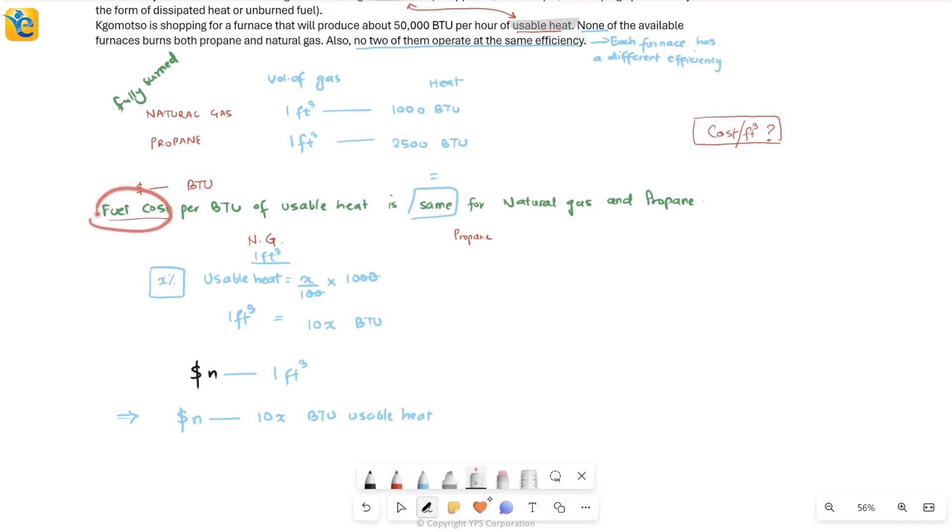This statement talked about cost per BTU of usable heat. So I simply have to do a division here and I'm going to get N over 10X as the cost per BTU of usable heat. At this point, you can see that this has two unknowns. One of these unknowns is what you want to mark in the table finally and the other is efficiency that we randomly assumed. If you repeat the same process here for propane, you'll exactly go the same way. Suppose efficiency this time is Y percent. It's going to be Y percent of 2500. When you do all of that work, if P dollars is the cost per cubic foot, then this time your expression is going to be P by 25Y. This is going to be cost per BTU of usable heat from here.